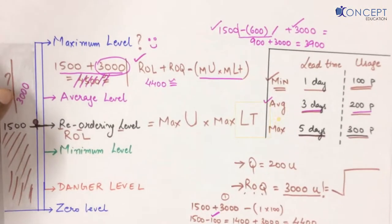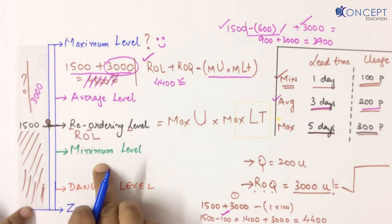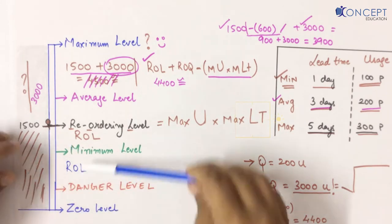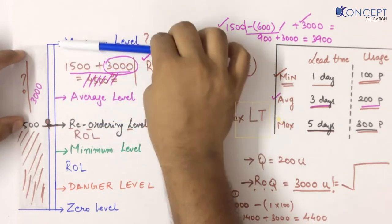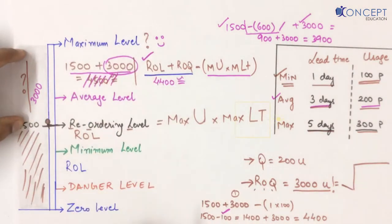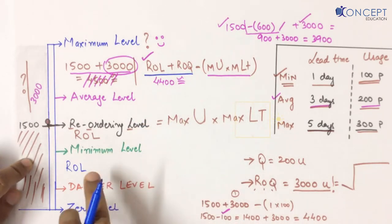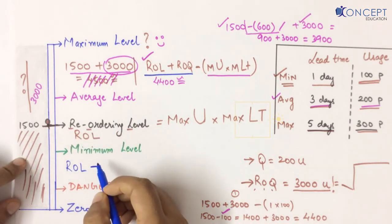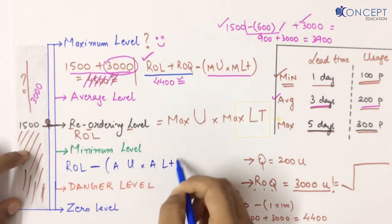Now we understand our maximum level. Now let's understand our minimum level. Minimum level will be below the reorder level. Think of it simply: to go above ROL to maximum, the formula is ROL + something (ROQ). To come below ROL to minimum, the formula is ROL minus something. Minimum level = Re-order level − (average usage × average lead time).